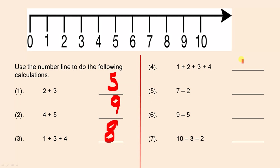The next one: one plus two plus three plus four. Put your pencil on the one. The next number is two: one, two. The next number is three: one, two, three. And the next number is four: one, two, three, four — and the answer is ten.